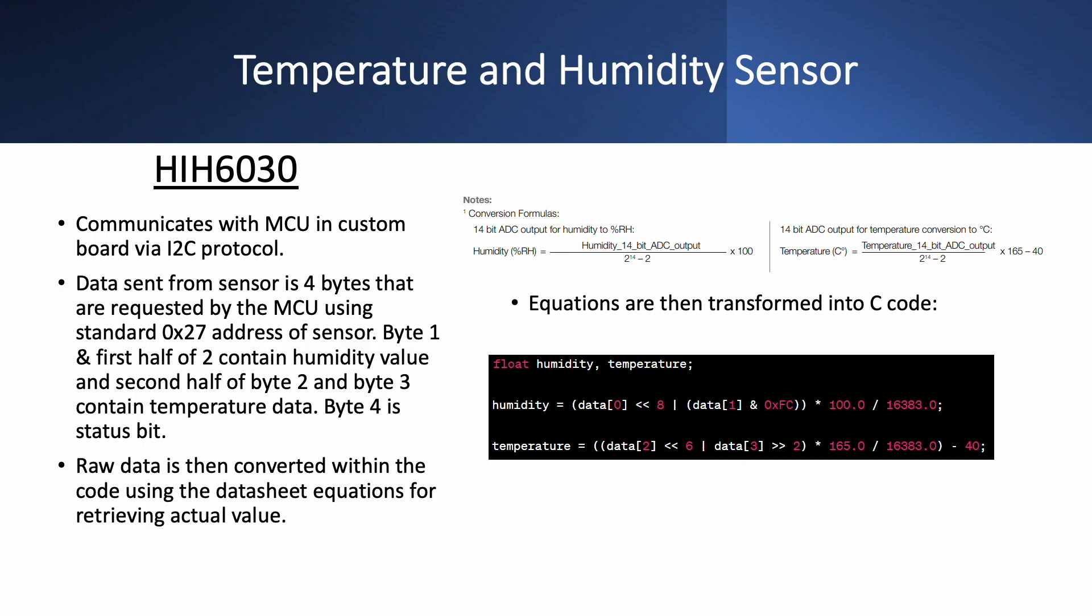Byte 4 is only used as a status bit. Now this raw data, which is obtained by the MCU, is then converted via equations that are given in the datasheet of the chip. And then the equations look like this into the C code. And we will see more as we see the midterm demonstration.